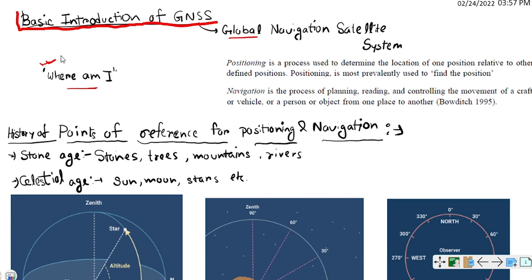So what is positioning? Positioning is a process used to determine the location of one position relative to other defined positions. That other defined position is the point of reference. Positioning is most prevalently used to find the location actually.